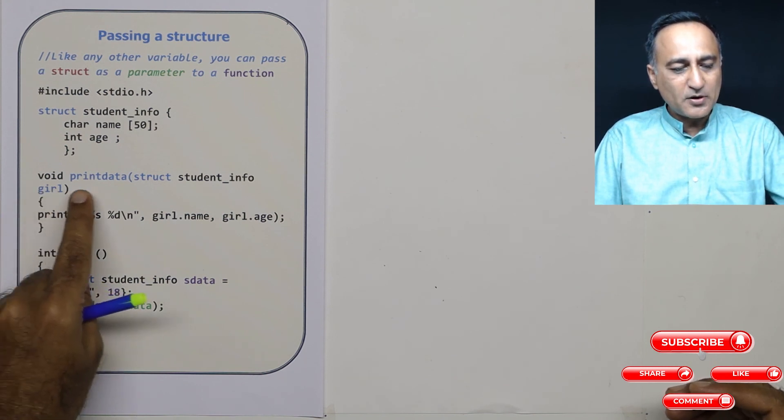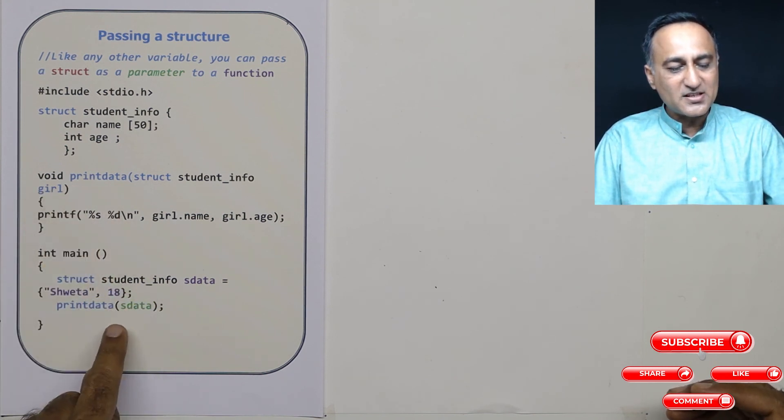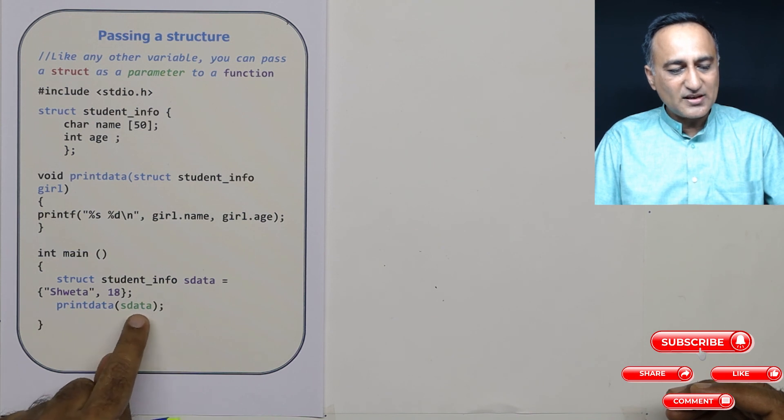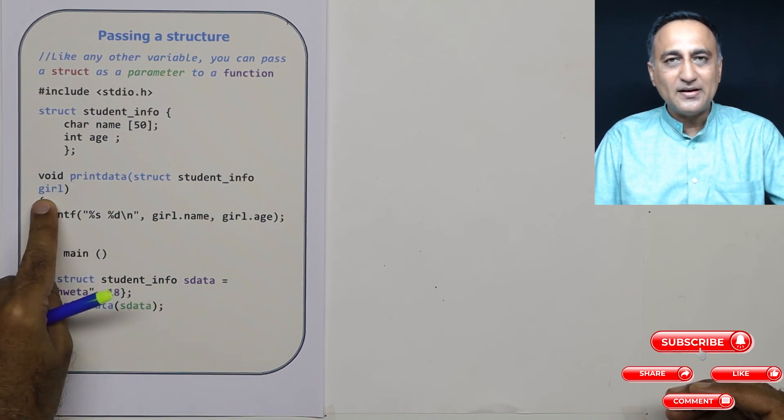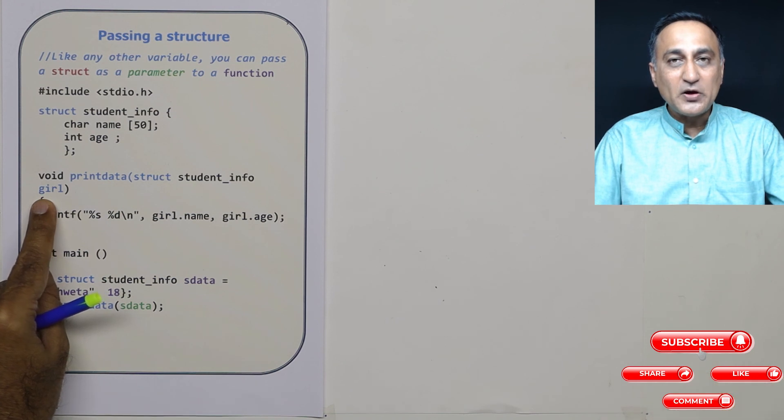It is void here because print_data is not returning any structure back. This structure is just being copied into girl. So here it is passed by value.